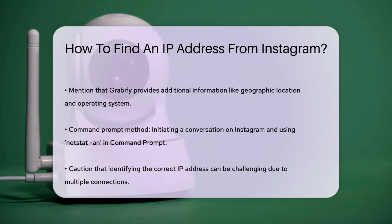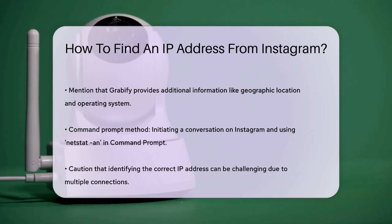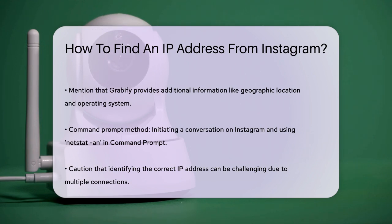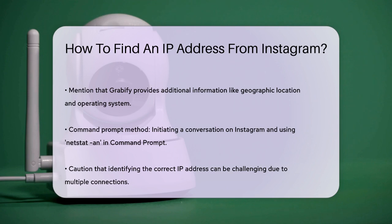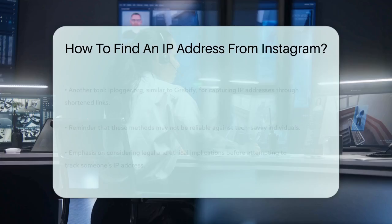If you're comfortable with using command prompts, you can also try this method. Start by initiating a conversation with the account you want to track on Instagram. Keep the message window open, then open the command prompt on your computer by pressing Win+R and typing CMD. Enter the command Netstat -AN and press Enter. This will show you a list of IP addresses connected to your computer, including the one from the Instagram account you're tracking. However, identifying the correct IP address can be tricky since multiple IPs will be listed.